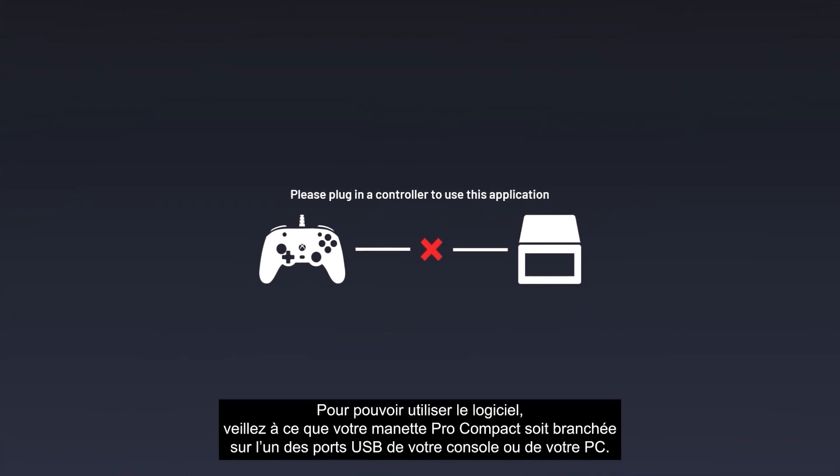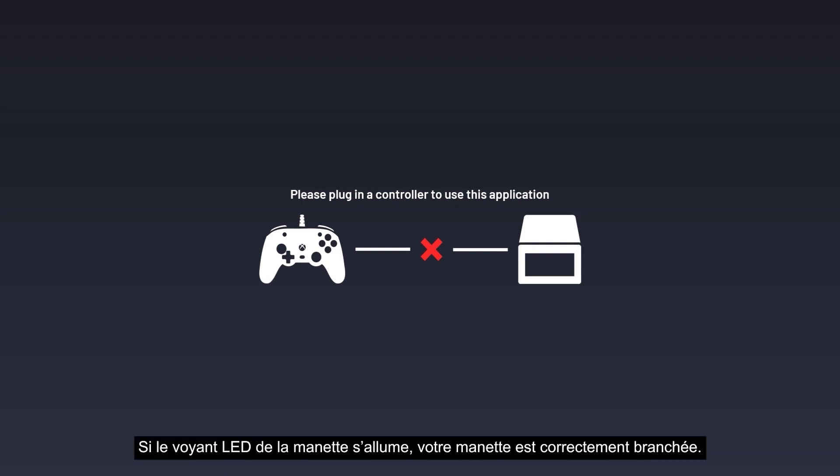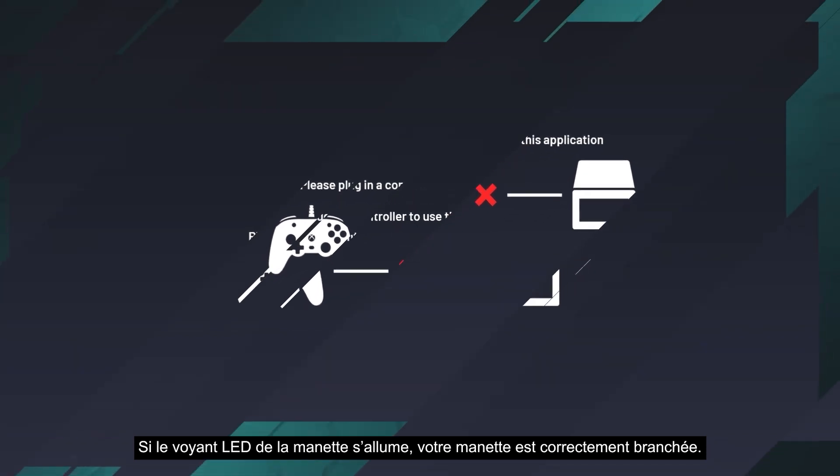To use the software, make sure your Pro Compact controller is connected to one of the USB ports on your console or PC. If the LED indicator on your controller is on, your controller is connected properly.